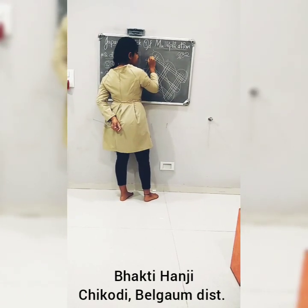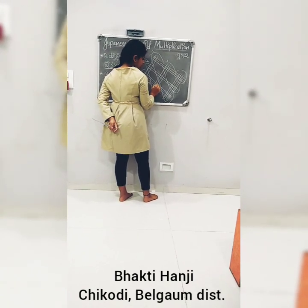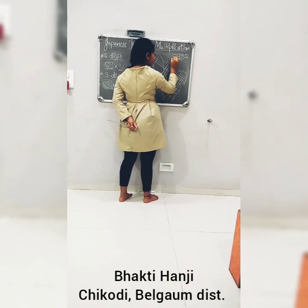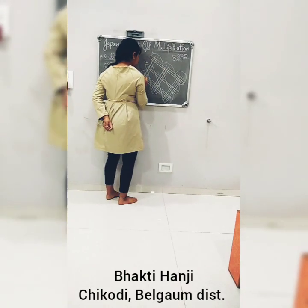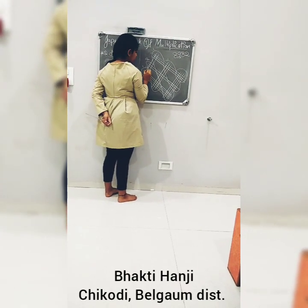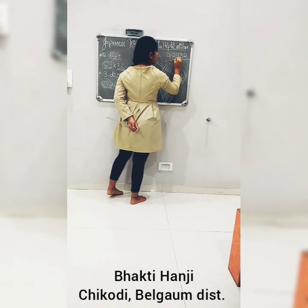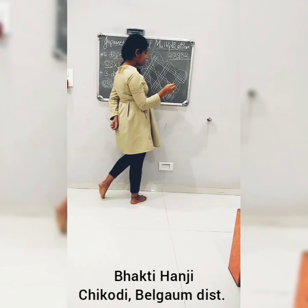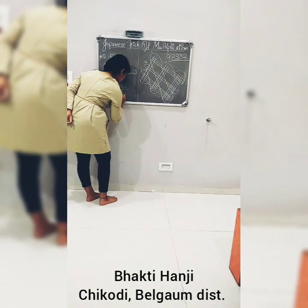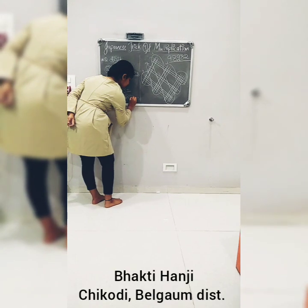Counting part 4: counting gives 18, plus 2 carry makes it — so 8 goes here and 1 goes as carry. Then part 5: counting gives 9. Hence 98982 is our answer. Hence the solution for 234 and 423 is 9, 8, 9, 8, 2.